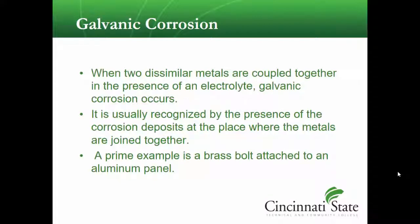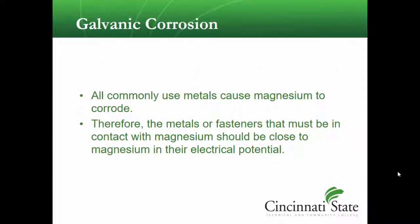When two dissimilar metals are coupled together in the presence of an electrolyte, galvanic corrosion occurs. It is recognized by the presence of corrosion deposits where the metals are joined together. A prime example is a brass bolt attached to an aluminum panel. We also gave an example here of steel and aluminum.